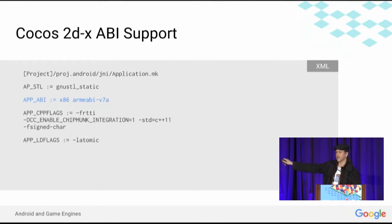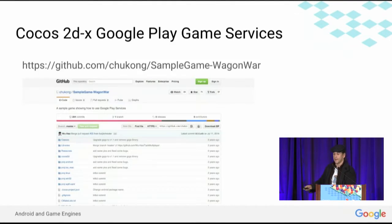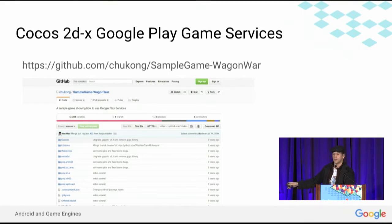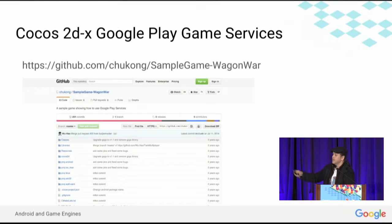By putting multiple ABIs on the line separated by spaces, we get a fat build with both binaries, and Android chooses the best automatically. There are lots of pages showing how to integrate Google Play Game Services with Cocos 2DX, and it's easy because we have a C++ client. The Cocos team created their own sample showing leaderboards, achievements, and turn-based multiplayer.